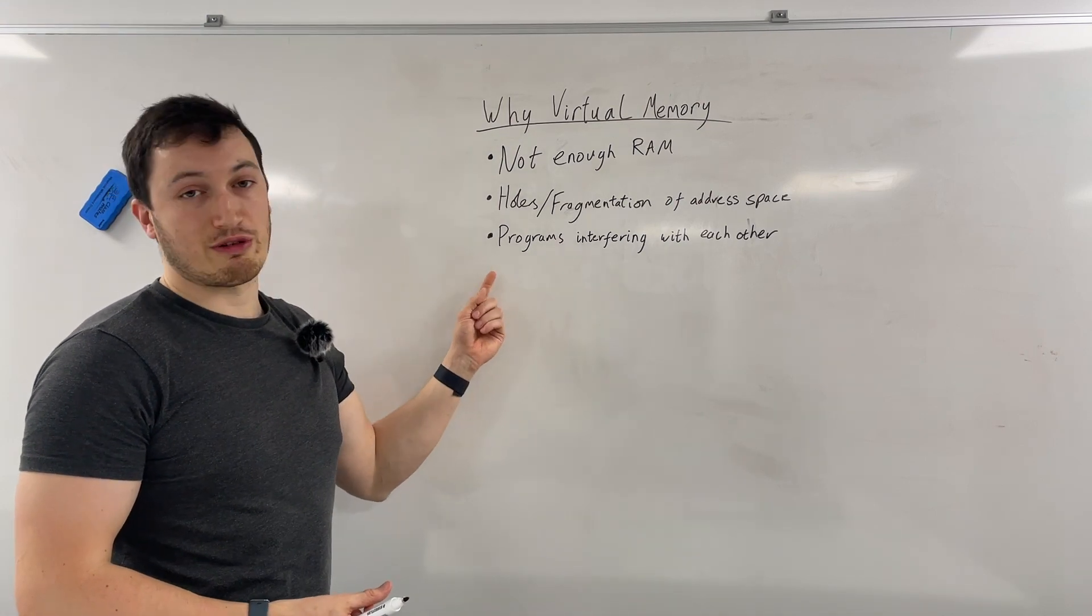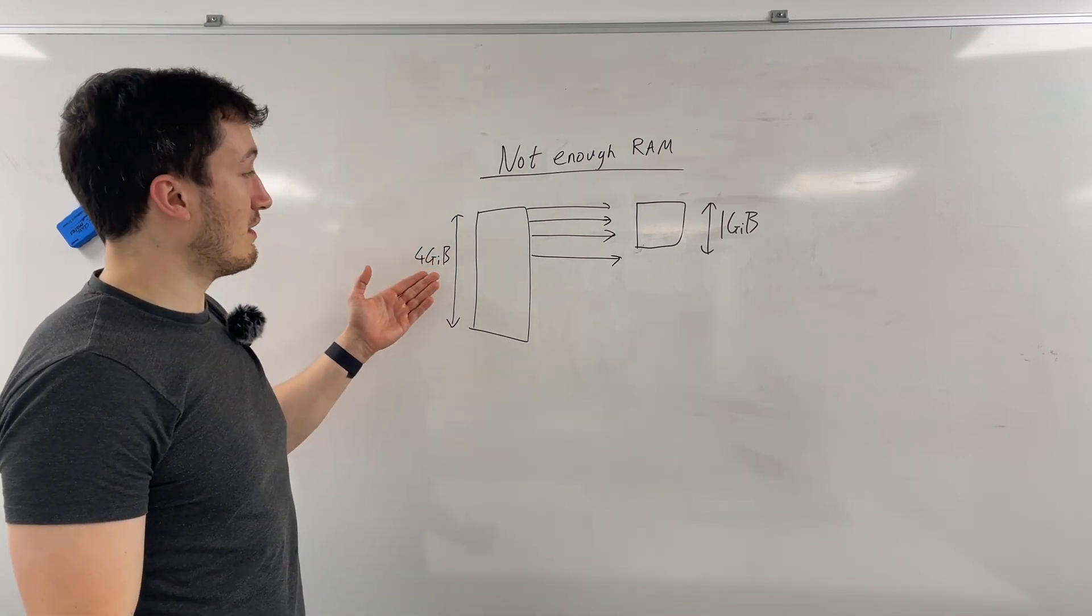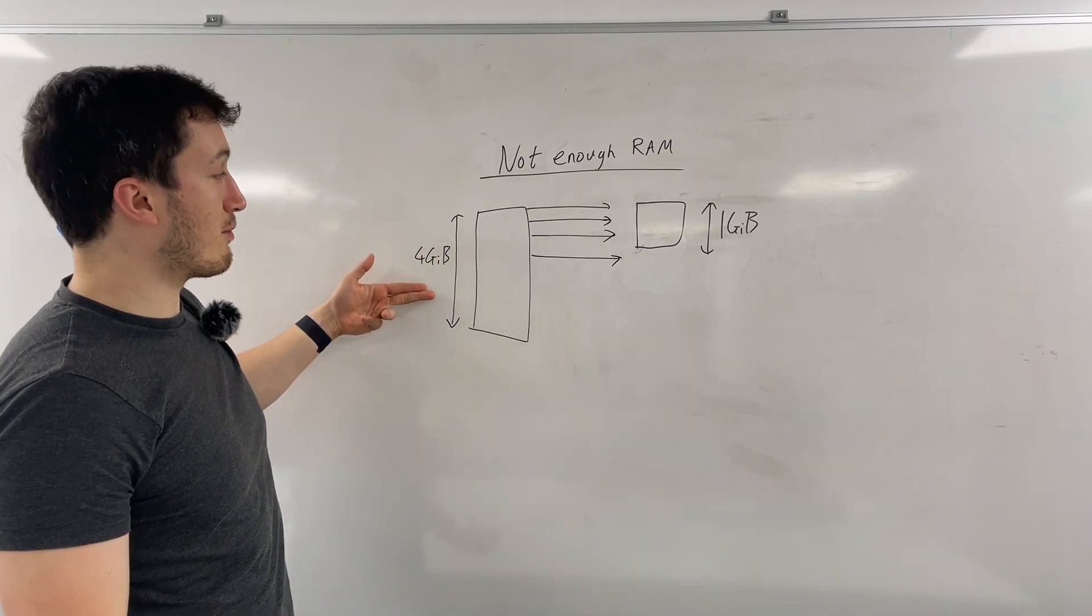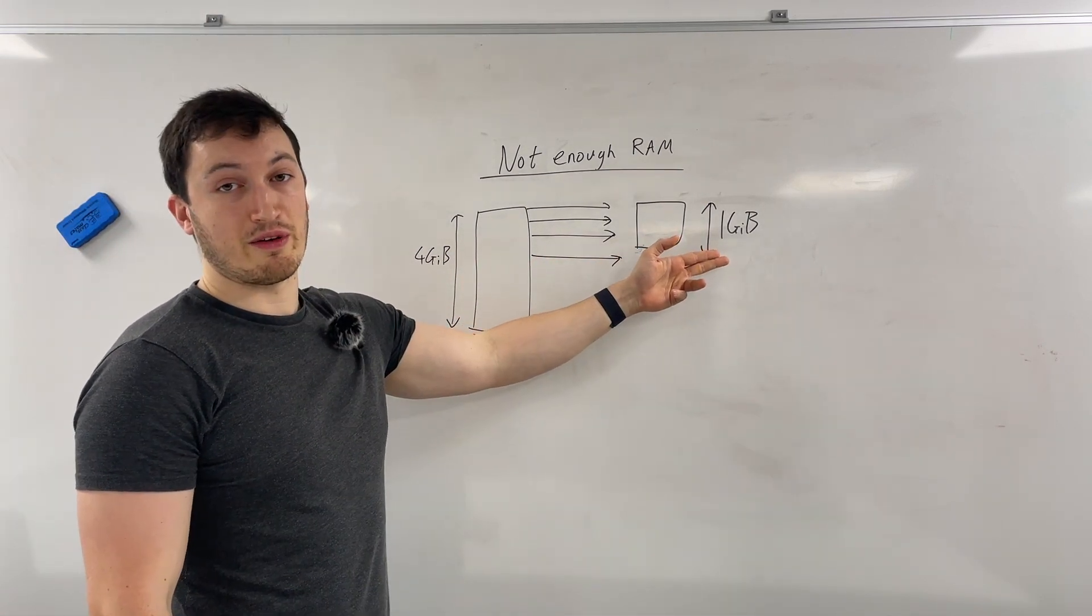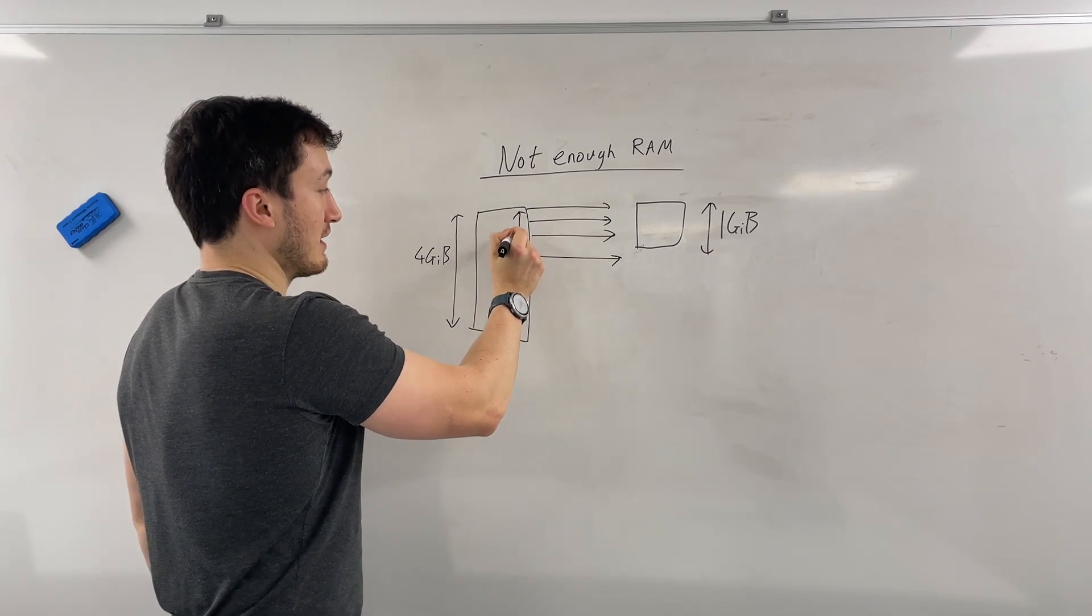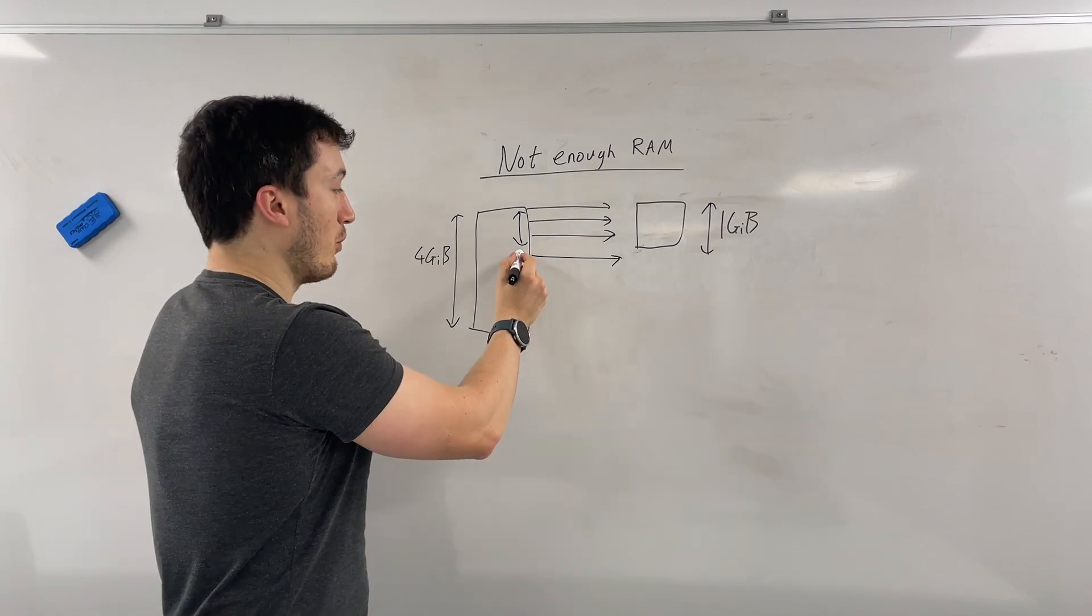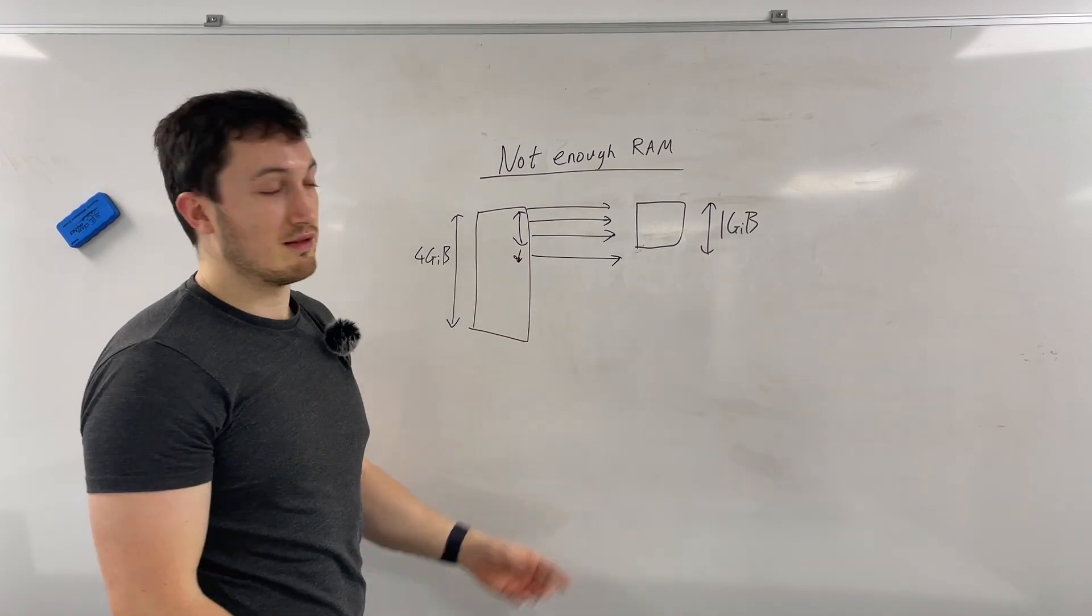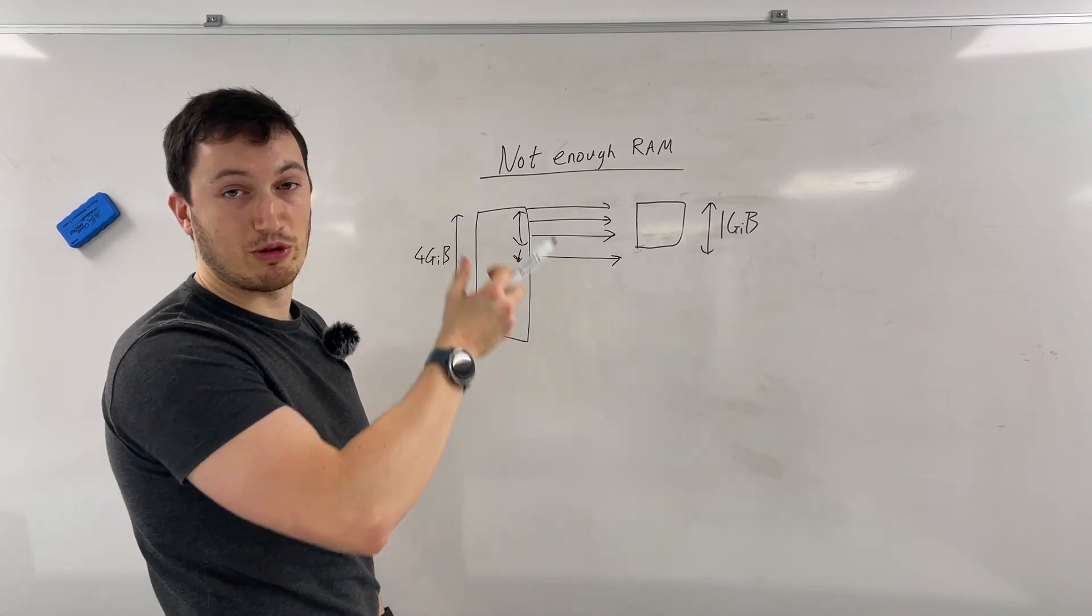So the first problem of not enough memory is, you can see, imagine this is a program which expects to have four gigabytes of memory. But you only have one gigabyte of RAM installed. What happens, it's fine if you're accessing addresses within this region because they can map directly to your RAM. But what happens when you go outside of that region and there's no RAM? So it would cause a problem. So that's one of the things that virtual memory will solve.